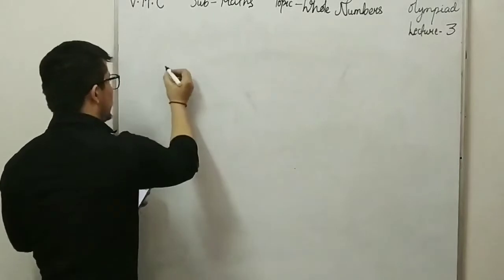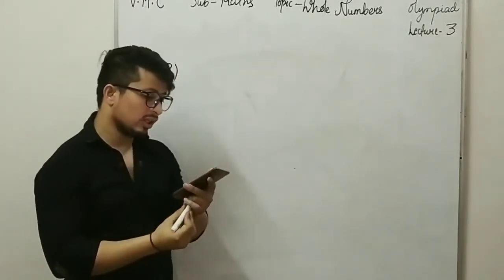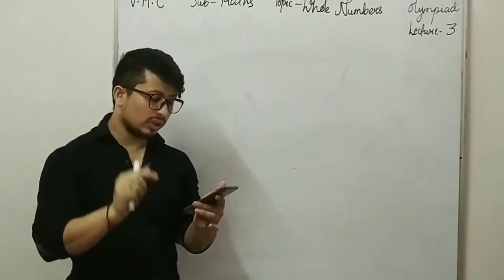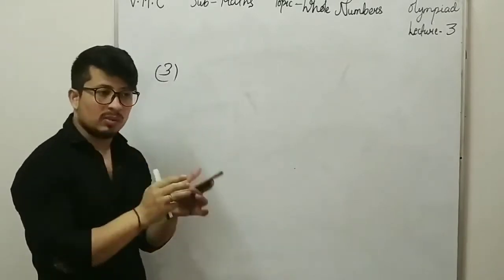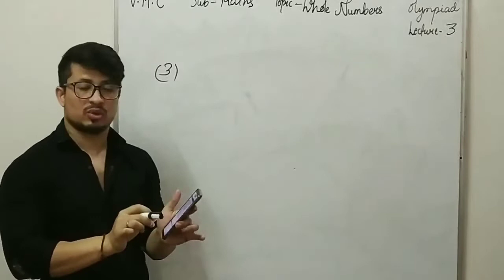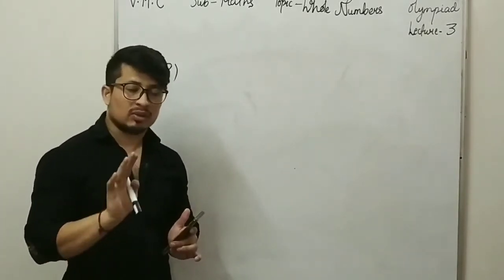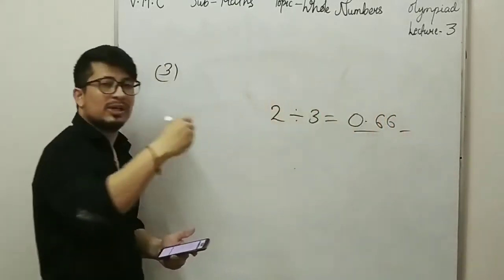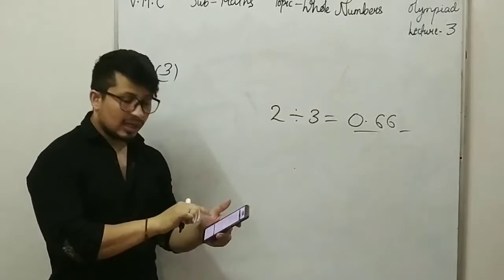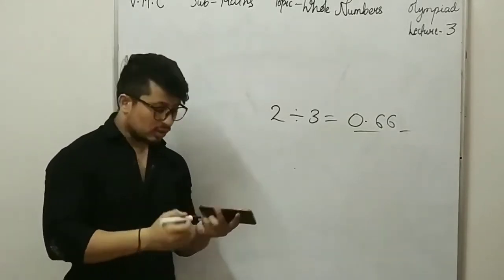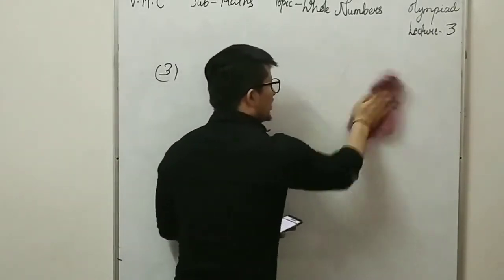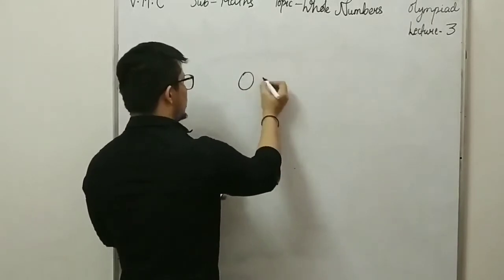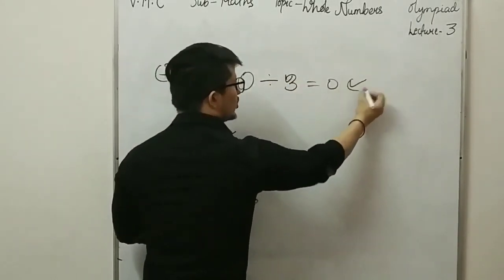Next, question number 3: which of the following is an example showing whole numbers are closed under division? We have to show that the whole number is closed under division. The first option is 0 divided by 3 — the answer is 0, which is a whole number. We are satisfied. Next, 60 divided by 15 — the answer is 4, which is also a whole number.